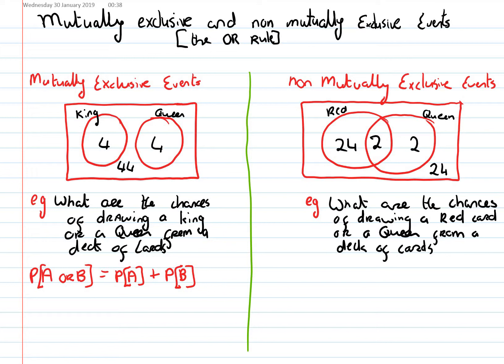So, all we do is look for the probability of getting a king, and that is 4 out of 52. OR is plus probability of getting a queen, which is also 4 out of 52. And that will give us, when we add it up, 8 out of 52.